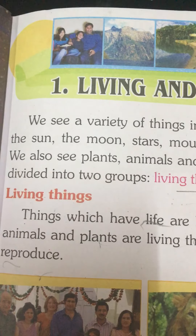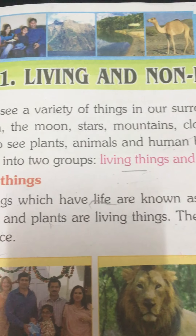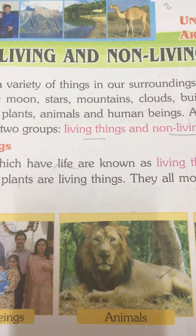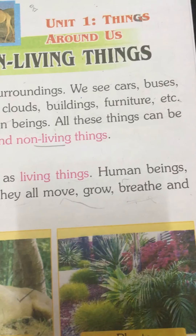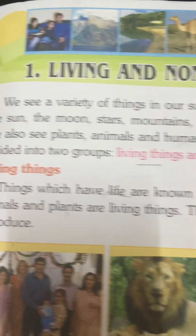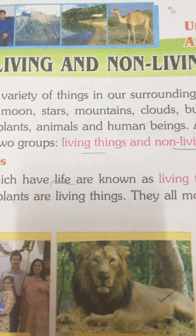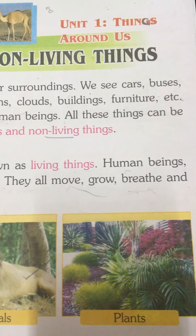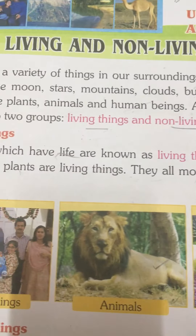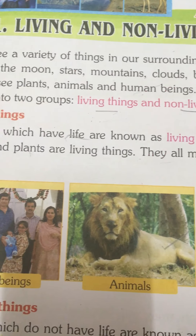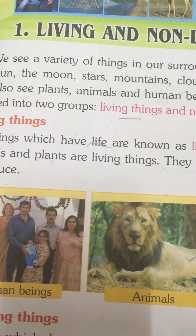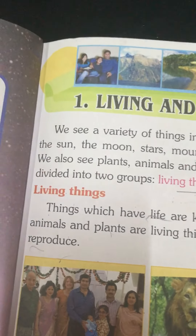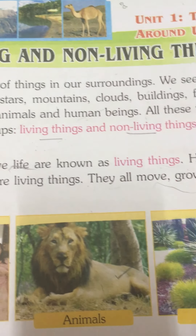We can see a variety of things in our surroundings. We can see cars, buses, the sun, the moon, stars, mountains, clouds, buildings, furniture, and so on. We also see plants, animals, and human beings.